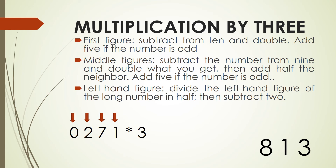Now we are at the leftmost position. We find half of the leading digit 2, which is 1, plus the 1 we were carrying gives 2. Then we subtract 2, which gives 0. We write that 0 and we have the answer we were looking for.